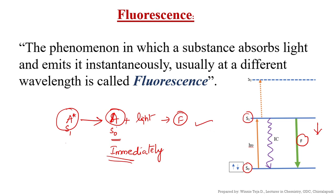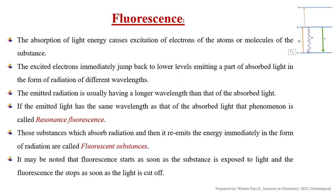Why is it releasing immediately? Because the molecule is present in the same spin states — this is singlet state, and this is singlet state. That is why the emission is very fast; it is an immediate process. The absorption of light energy causes excitation of electrons of the atoms or molecules. This is the very first step of the Jablonski diagram, that is absorption, and the excited electrons immediately jump back to the lower levels.